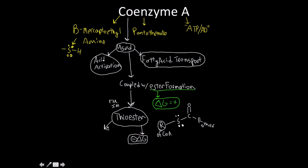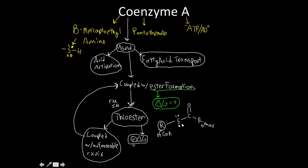So the delta G is definitely very negative — it's a very favorable reaction to take place. Because of this, we can often couple it with unfavorable reactions such as the formation of a regular ester. The delta G value for coenzyme A's hydrolysis is around negative 30 kilojoules, which is really similar to ATP.